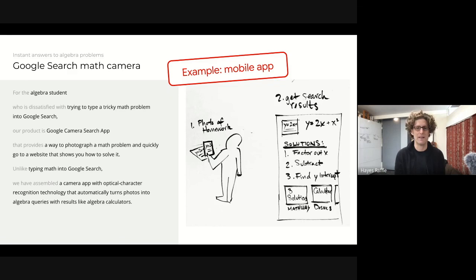Unlike typing math into Google Search, we have assembled a camera app with optical character recognition technology that automatically turns photos into algebra queries with results like algebra calculators. I did a quick sketch of a student photographing their homework and then a very rough wireframe showing a search results page with the user's query. As you can see, this is pretty rough. I did this in about five minutes or 10 minutes once I had the idea.